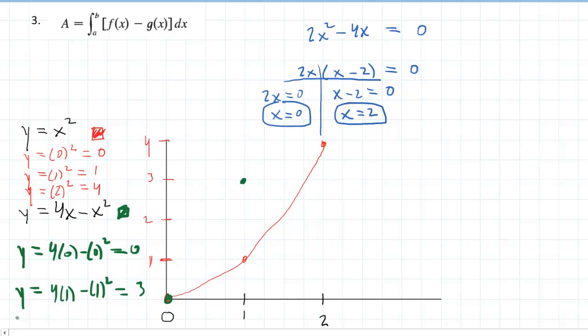And then finally, we're going to plug 2 in. And we'll have 4 times 2 minus 2 squared, which will give us 4. So that point lies at 2 comma 4.